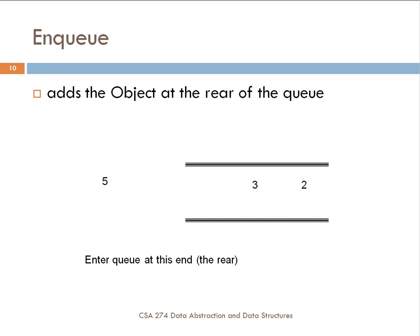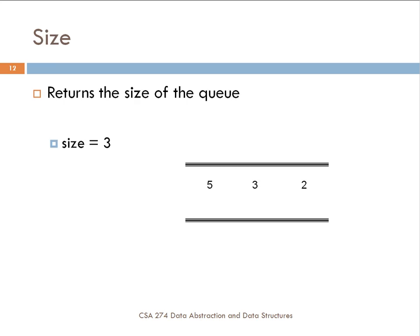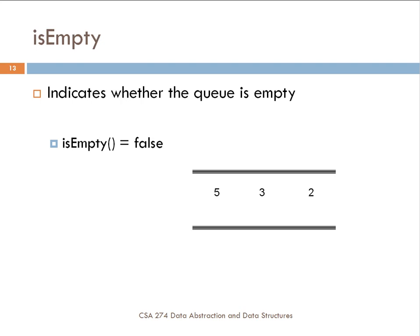The enqueue operation adds the object at the rear of the queue — if my queue has 3 and 2 with 2 at the front, adding a 5 puts it at the end. Dequeue removes and returns the object at the front of the queue — you leave the queue at the front, like getting in line, and the elements move forward. The size operation returns the size of the queue — with elements 5, 3, 2, the size equals 3. Is_empty returns false because there are elements in the queue.